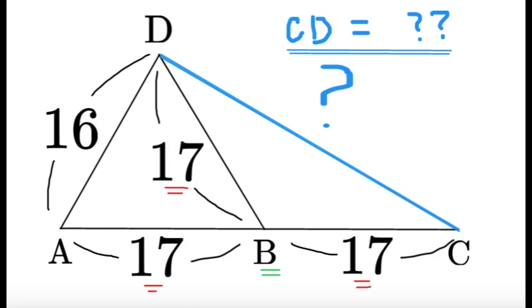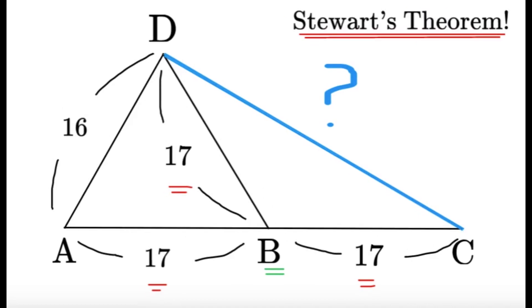Now, the first solution, we have a lot of side lengths. So we have just CD which is missing, and we can practically get all the other side lengths. And this prompts us to use Stewart's theorem.